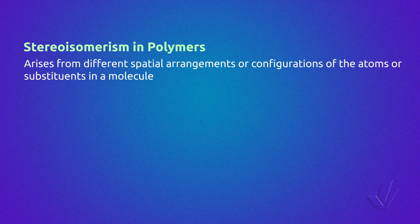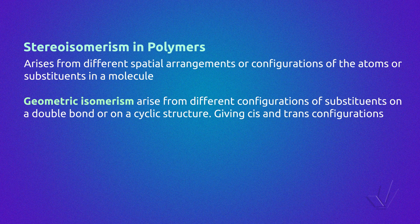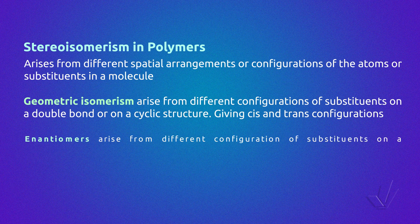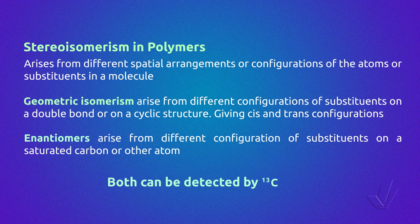Stereoisomerism in polymers arises from different spatial arrangements or configurations of the atoms or substituents in a molecule. Geometric isomerism arises from different configurations of substituents on a double bond or on a cyclic structure, giving cis or trans configurations. Enantiomers arise from different configurations of substituents on a saturated carbon or other atom. Both can be detected by carbon-13 NMR.